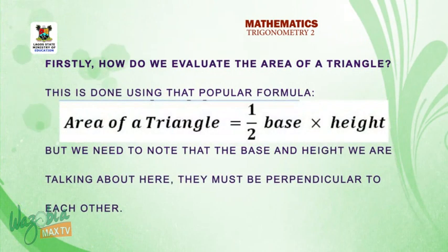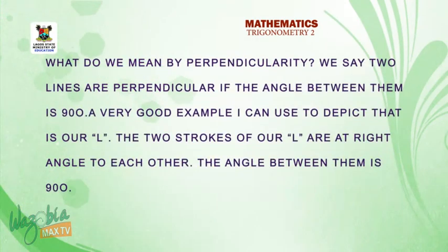Firstly, how do we evaluate the area of a triangle? This is done using that popular formula: Area of a triangle equals half base times height. But we need to note that the base and the height we are talking about here must be perpendicular to each other. What do we mean by perpendicularity? We say two lines are perpendicular if the angle between them is 90 degrees.